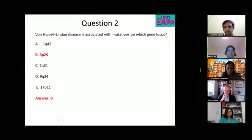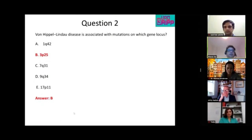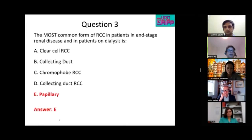The next question was: what is the mutation on the gene locus for BHD? The answer was B — 17q25. The next question was: what is the most common form of RCC in end-stage renal disease and in patients on dialysis?